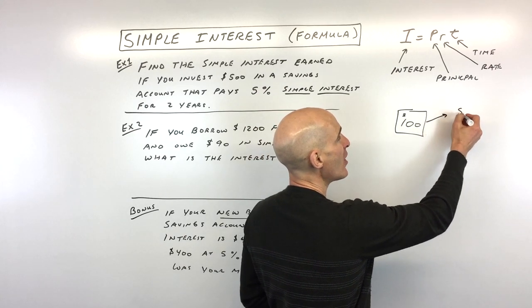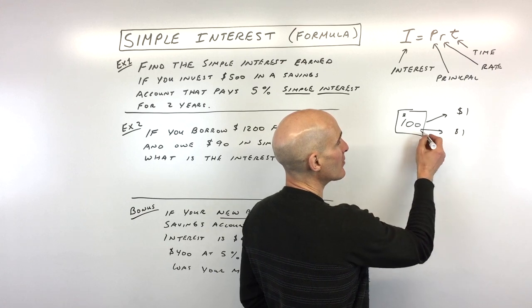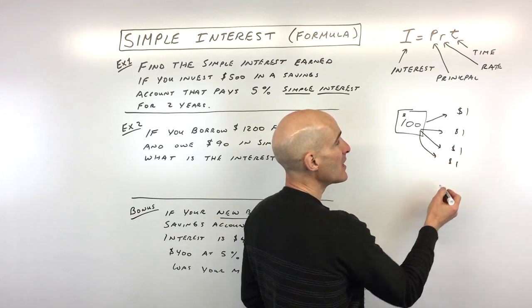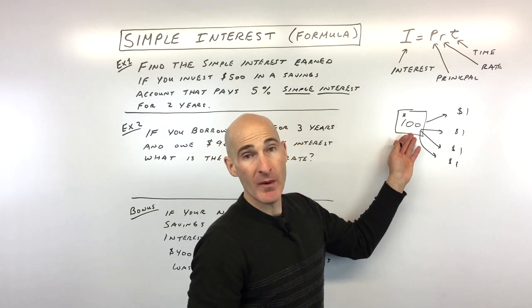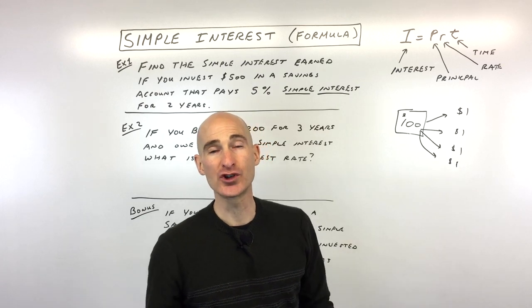this investment's going to spin off $1. The next year, another dollar, and the next year another dollar, and the next year another dollar. You can see that now you have the original amount, $100, plus four additional dollars, $104 total.